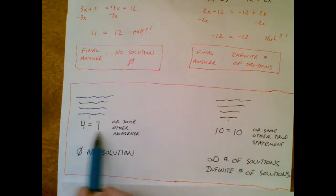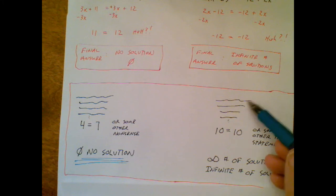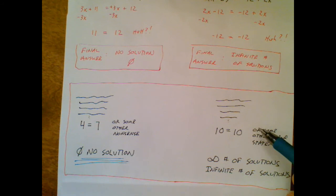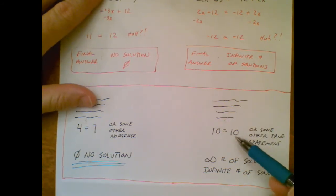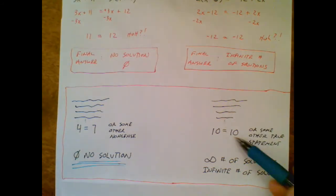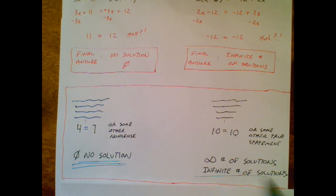4 does not equal 7. It's a false statement. I will answer no solution. I'm going through my work, this is all my steps, and the variable leaves the building, and I'm just left with a statement. In this case, 10 equals 10. Is that statement true?